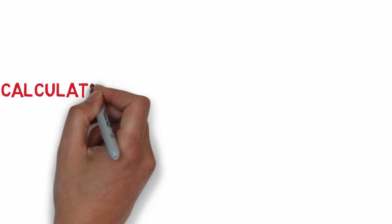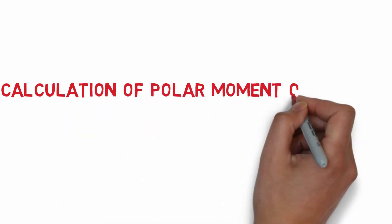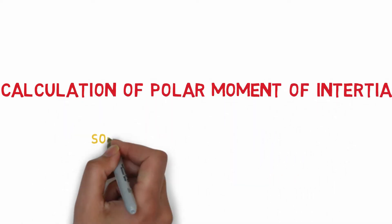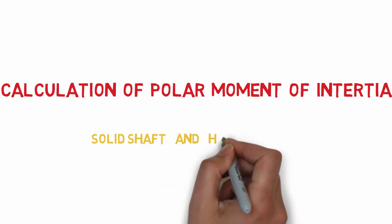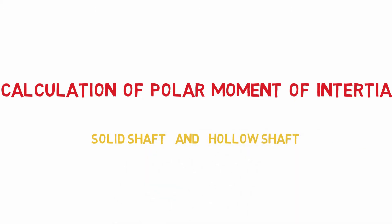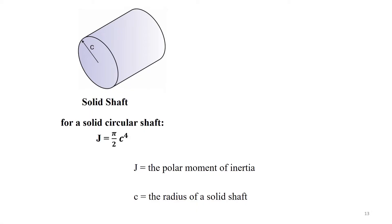Now we are going to look at how to calculate the polar moment of inertia of solid shaft and hollow shaft. For solid circular shaft, the polar moment of inertia, J, is J equals pi by two times the radius of solid shaft to the power of four.